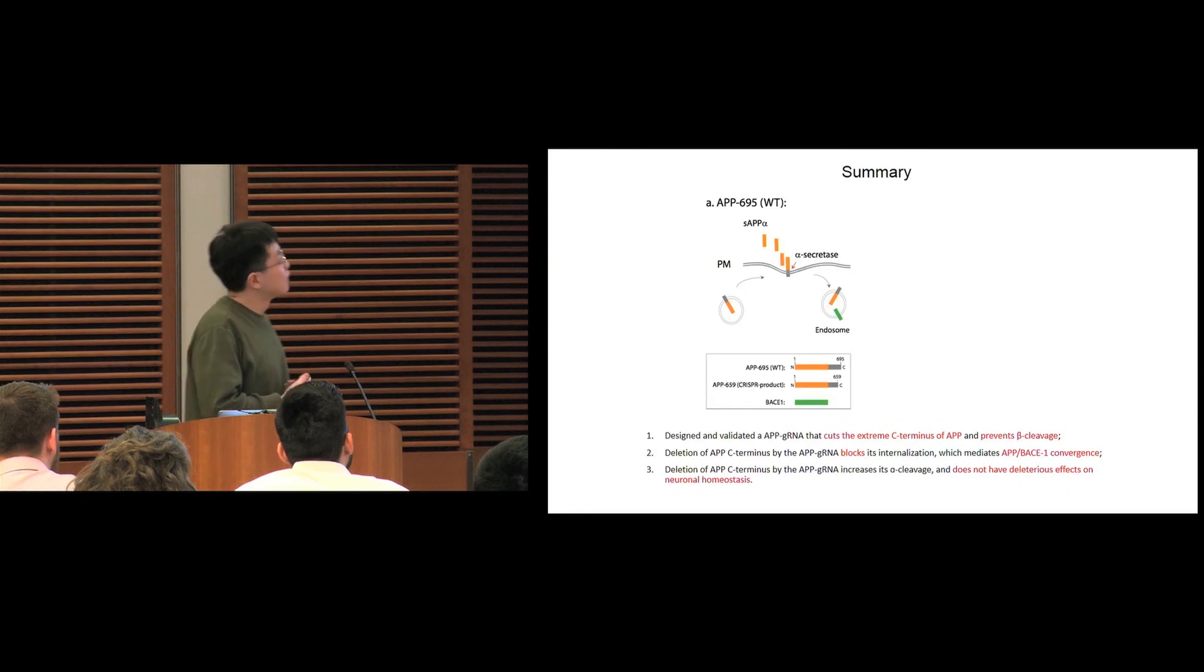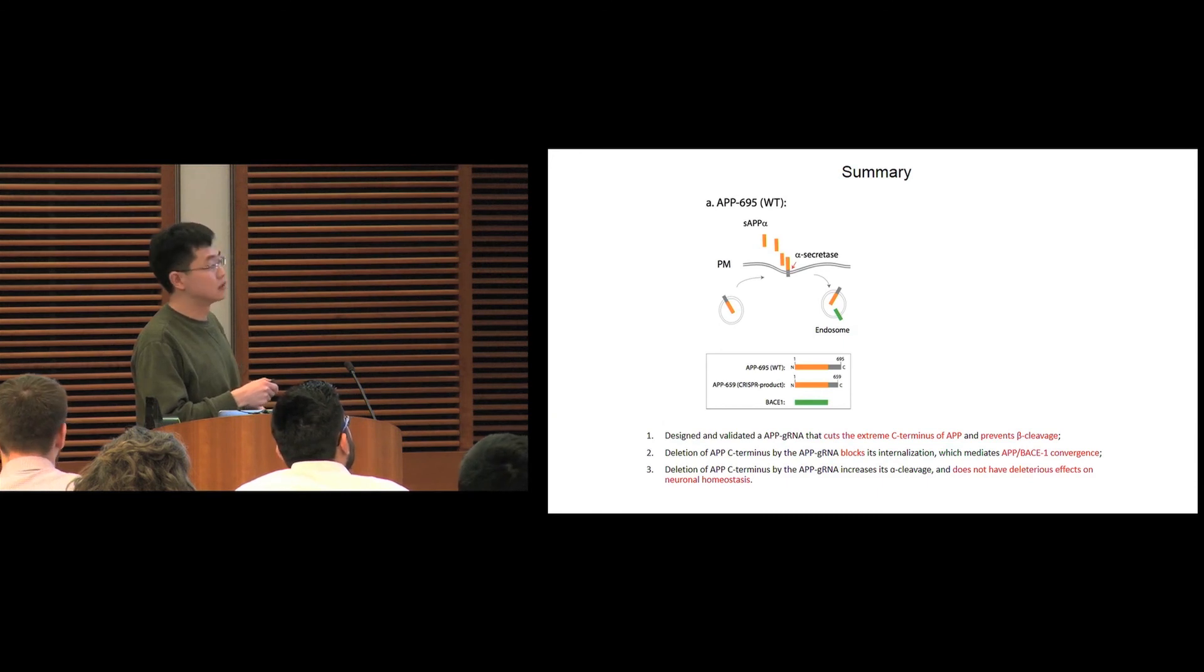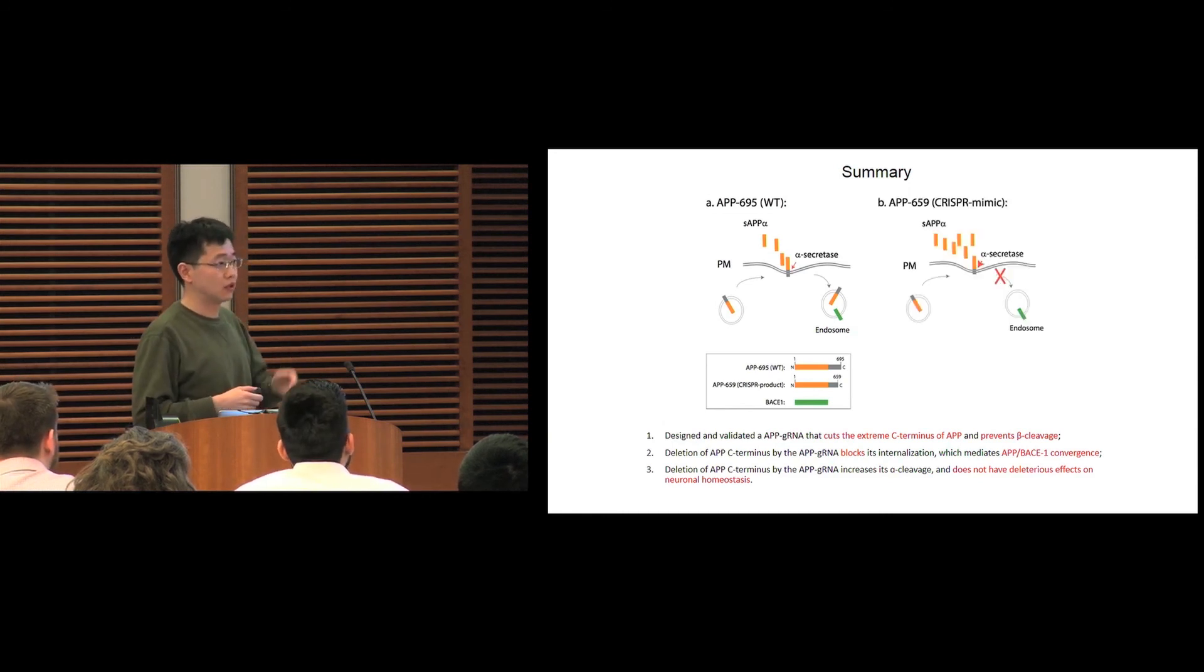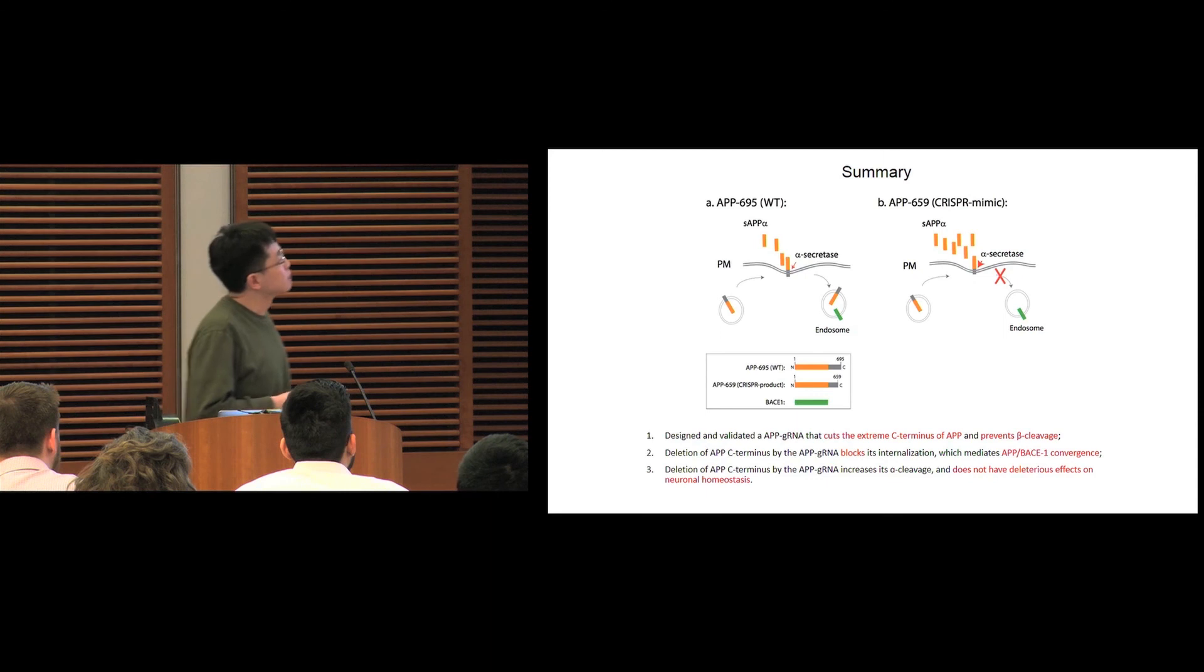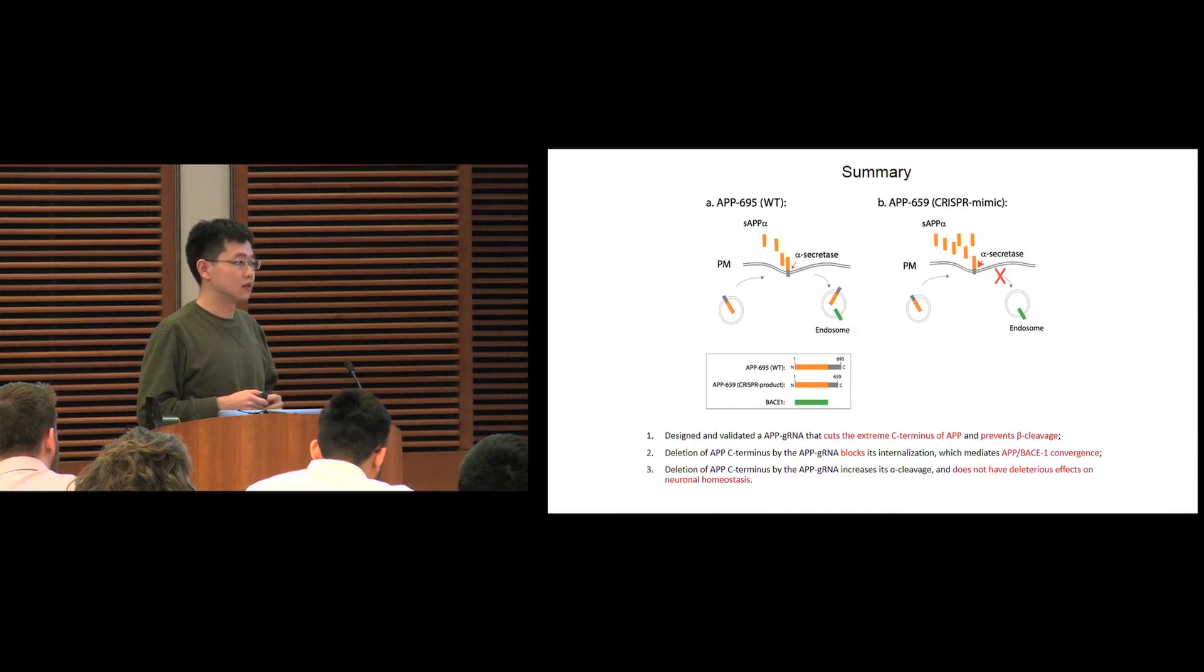Here, to summarize, wild-type APP can be internalized from the plasma membrane and then interact with BACE1 for beta cleavage at the endosome. However, if we edit endogenous APP gene and cut off the small C-terminus, then we can block APP internalization so that APP molecules are retained along the plasma membrane. The big advantage of our method is we only cut off a short part of the C-terminus and preserve the entire N-terminal, which is thought to play important physiological roles for APP in neural development.